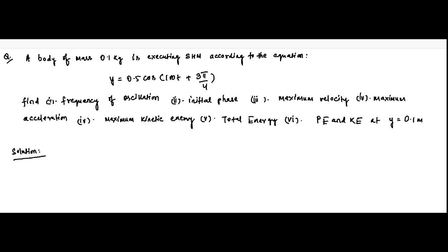First, we write the standard SHM equation format. It can be in sine or cosine — basically it is sinusoidal. We write it in cosine since the given SHM equation is also in cosine format, so it will be easy. The standard form is y = A cos(ωt + φ), where A is the amplitude. Comparing with the given equation y = 0.5 cos(100t + 3π/4):